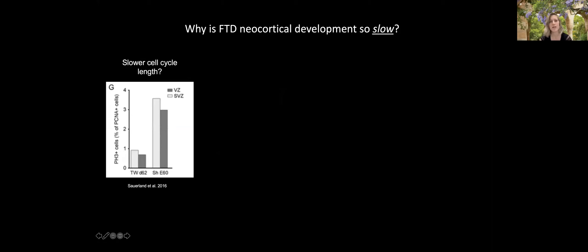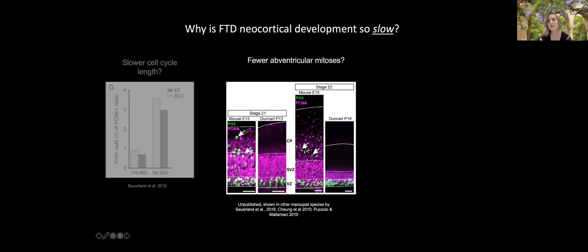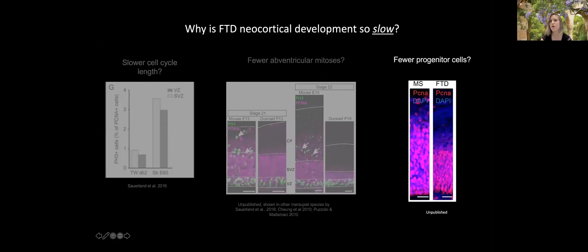It takes marsupials in general much longer to complete developmental events than mouse, and it's not entirely clear why. Hypotheses we're investigating include: whether marsupials have a slower cell cycle length and which parts of the cell cycle are affected; whether they have very few or no abventricular mitoses — they seem to lack a basal progenitor compartment, with PH3-positive mitotic cells absent above the ventricular zone; and whether there's a smaller initial reservoir of proliferating cells, leading to a slower exponential expansion during cortical development.